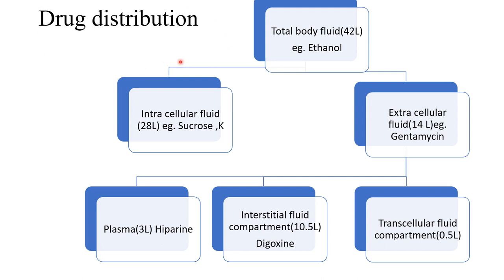Total body fluid is 42 liters, and smaller molecular weight water-soluble drugs like ethanol are distributed into the full 42 liters. Drugs like gentamicin and streptomycin remain in the extracellular fluid, with a volume of distribution of 14 to 16 liters. Higher molecular weight and highly protein-bound drugs like heparin and warfarin remain in the vascular compartment, with a low volume of distribution of about 3 liters. Some drugs like digoxin and chloroquine accumulate in tissue — chloroquine in the retina and digoxin in the heart.